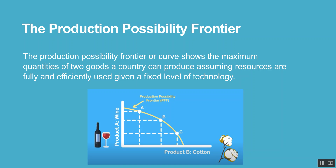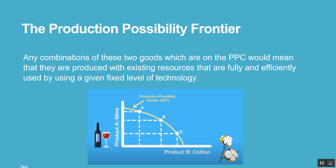The production possibility frontier, or curve, shows the maximum quantities of two goods a country can produce, assuming resources are fully and efficiently used, given a fixed level of technology. Any combinations of these two goods which are on the PPC would mean that they are produced with existing resources that are fully and efficiently used, given a fixed level of technology.